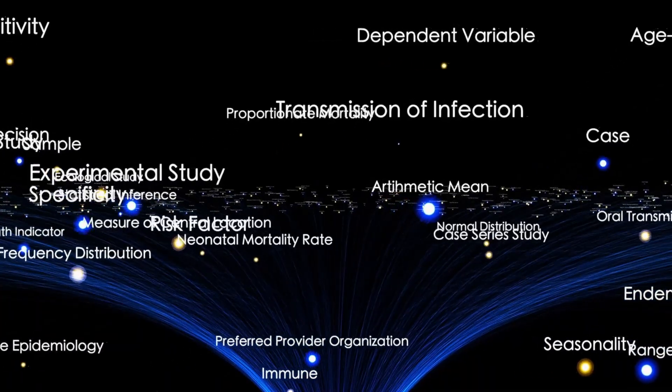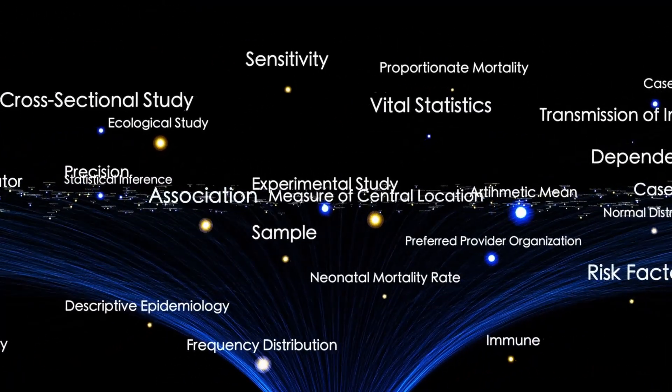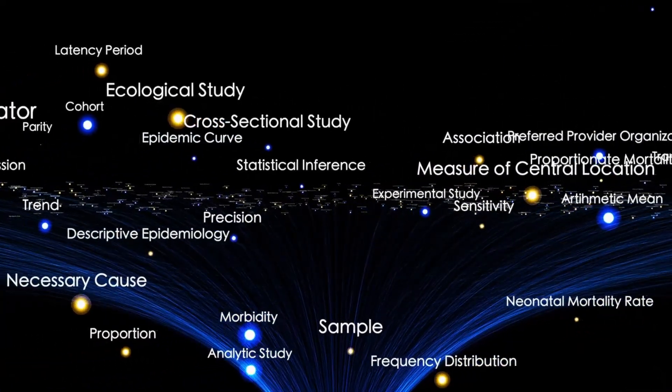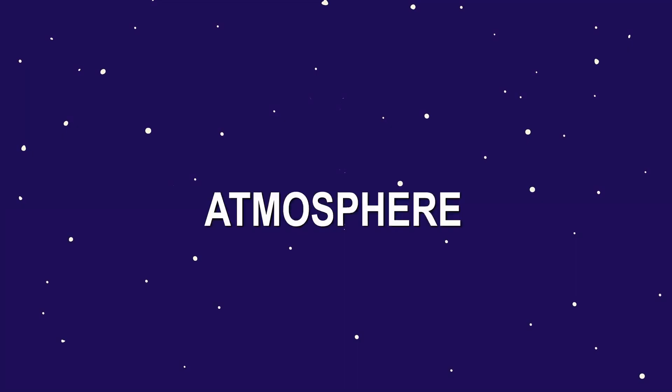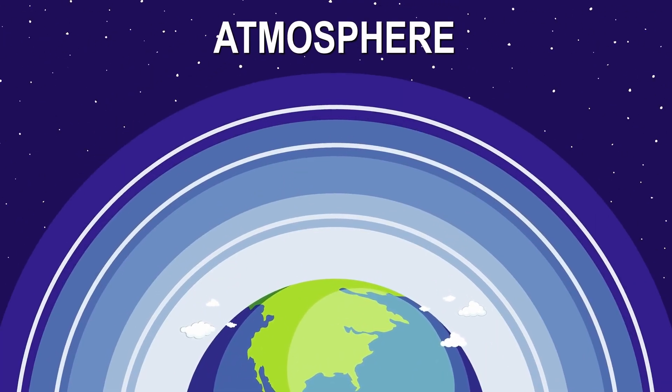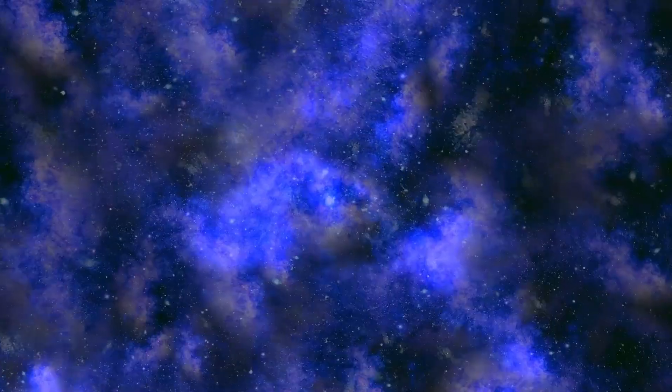Theories began to spiral out of control. Was 3i Atlas generating its own heat? Was it hollow? Could it be emitting exhaust? The combination of nickel and CO2 was too specific to ignore. Both are byproducts of combustion in high-performance alloys. Some physicists quietly admitted that the spectral readings looked disturbingly similar to what you'd expect from an engine plume. And yet the object continued its motion with unnatural calm, showing no trace of acceleration or instability.